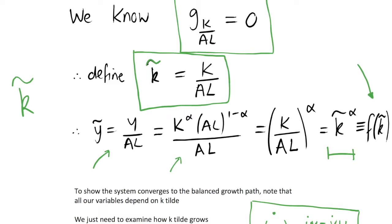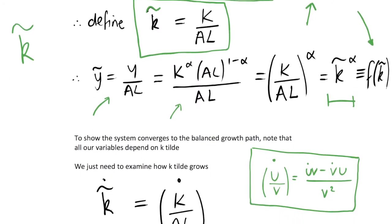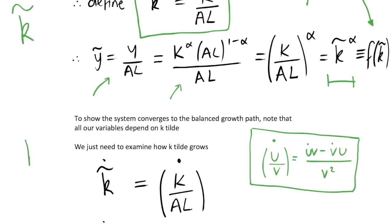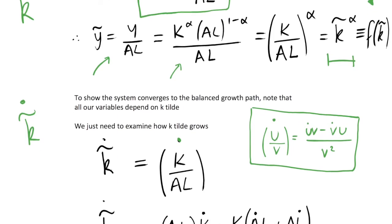All of our variables depend on k̃ on the balanced growth path, so all we really need to examine is how k̃ grows. We noted that on a balanced growth path the growth rate of k̃ is equal to 0, so we just need to figure out how k̃'s growth rate changes over time and whether it naturally ends up at 0 — if it does, that means we converge to the balanced growth path. So let's think about k̃-dot, the derivative of k̃ with respect to time. Note that the dot is over the whole expression k/AL, not just k-dot over AL — a distinction that will be clear in a moment.